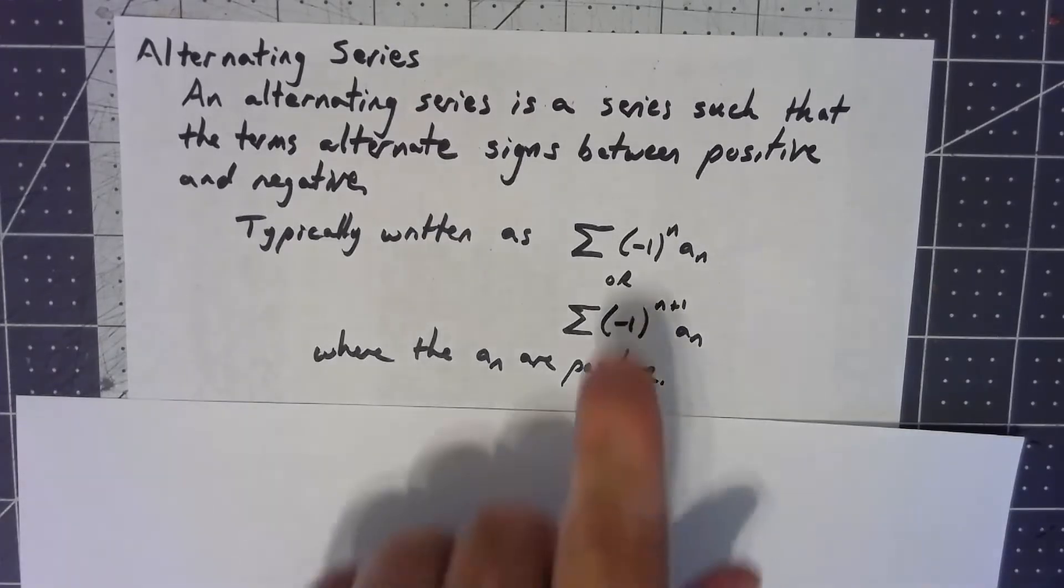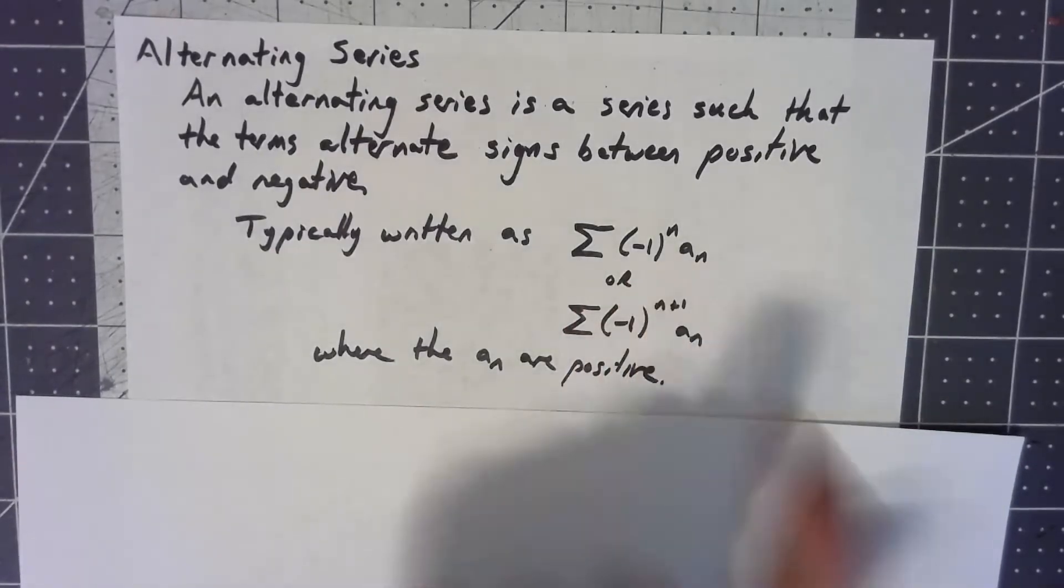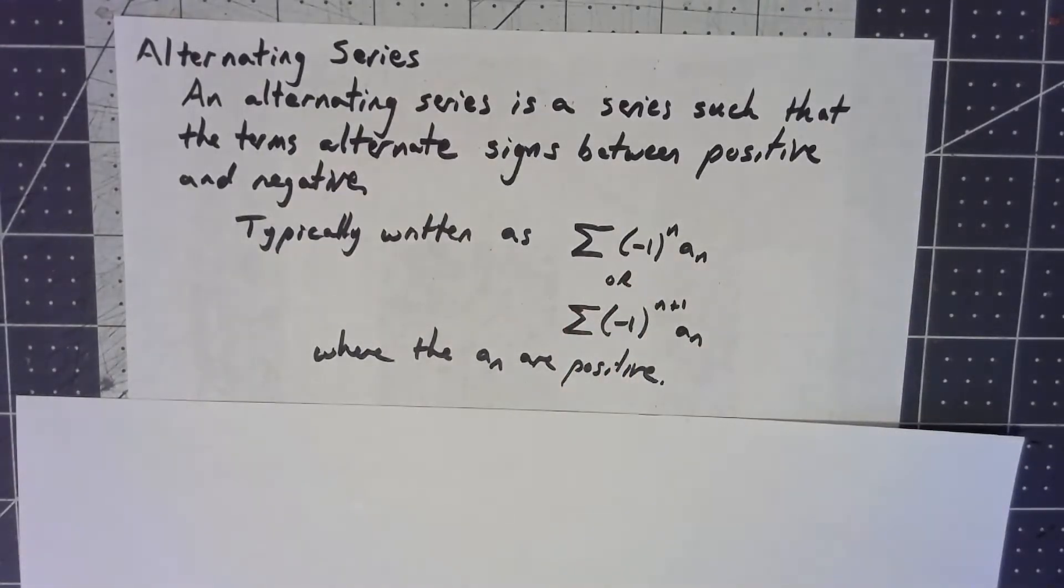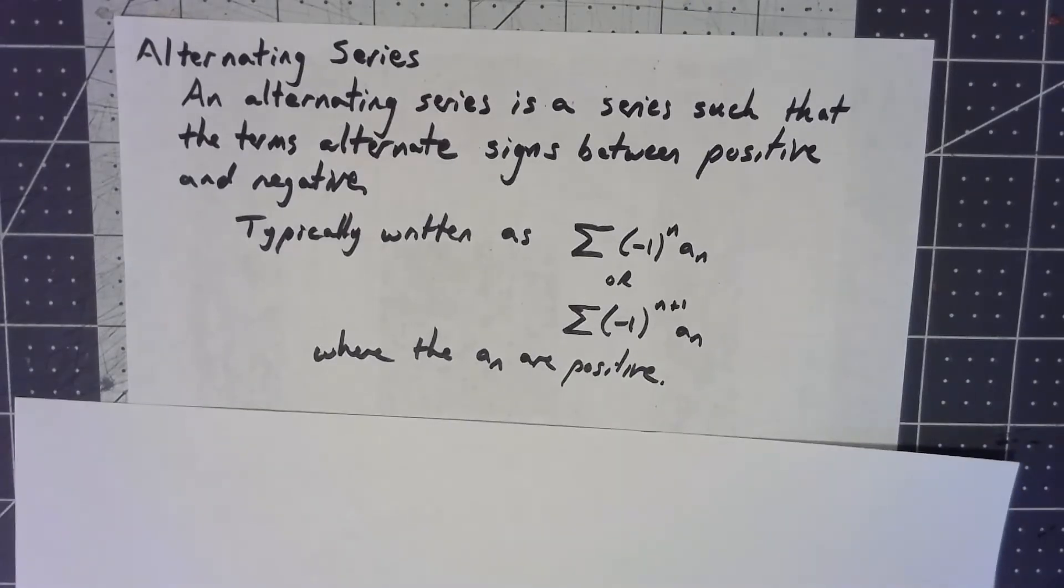And then we'll typically write it as that factor times something that's always positive. That way, we just don't need to worry about it not being alternating if the a_n somehow is sometimes positive and sometimes negative. Under those conditions, if we've got an alternating series, it's actually really easy for this thing to converge.